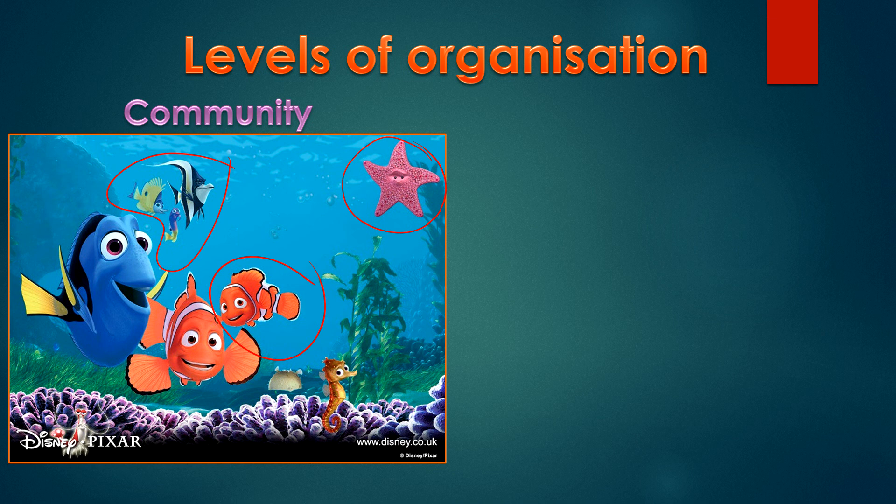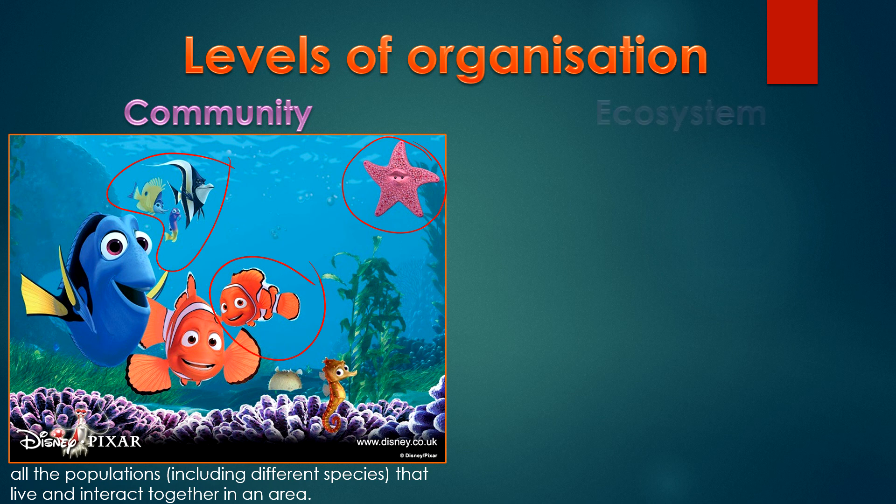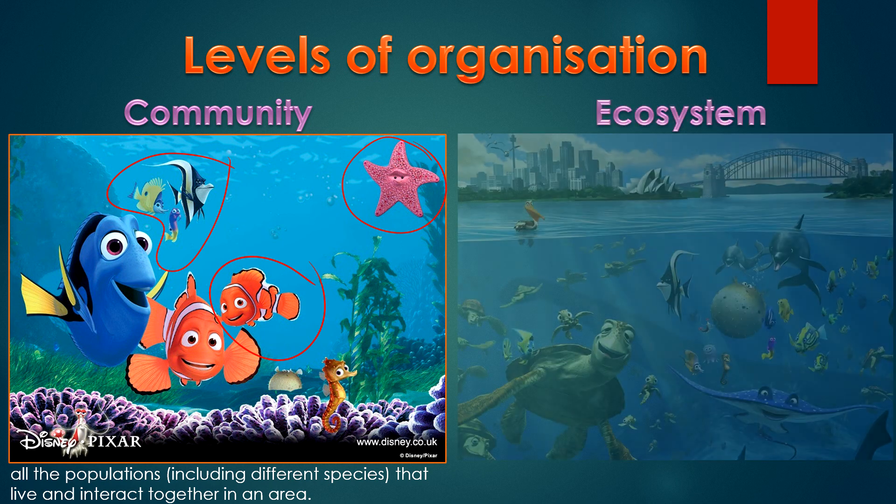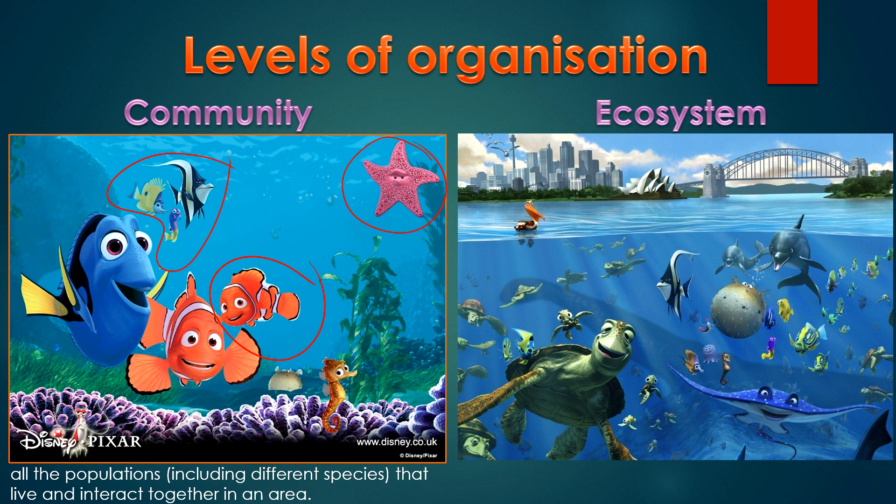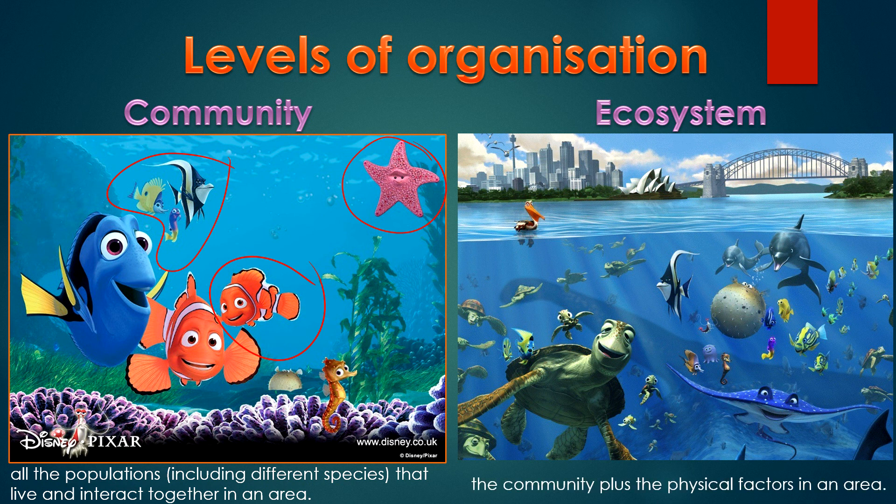All of the animals in the fish tank were living together. They are different species but their home, the fish tank, allows them to be a community. The next level of organisation is an ecosystem. An ecosystem is the community plus all the physical factors in an area.